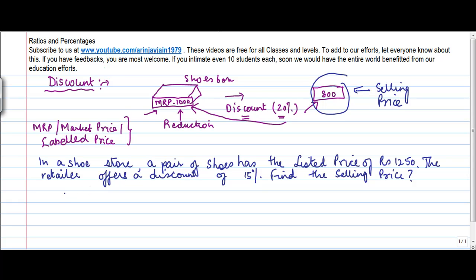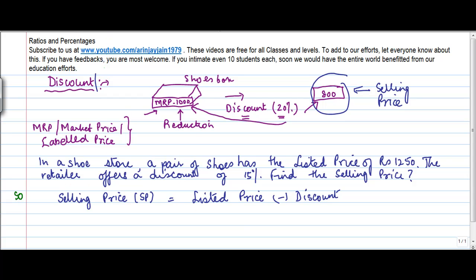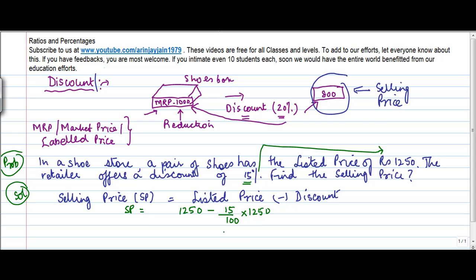The correlation between these two is that the selling price, or SP, is equal to the listed price less the discount. I need to calculate the selling price. I know the listed price is 1250. The discount — I don't know the amount, but I know it is 15%, and as discussed, 15% is always of the listed price. So the discount equals 15 upon 100 into 1250.